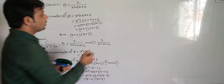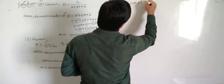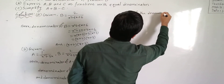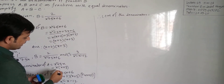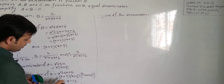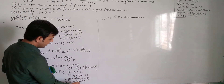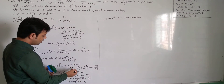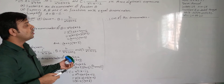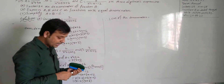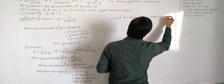Now we find the LCM of the denominators. Denominator of a is x(x + 3), denominator of b is (x + 2)(x + 3), and denominator of c is (x + 3)(x - 4). Here (x + 3) is common to all. The factors x, (x + 2), and (x - 4) are uncommon. Taking all common and uncommon factors, the LCM of the denominators is x(x + 2)(x + 3)(x - 4).